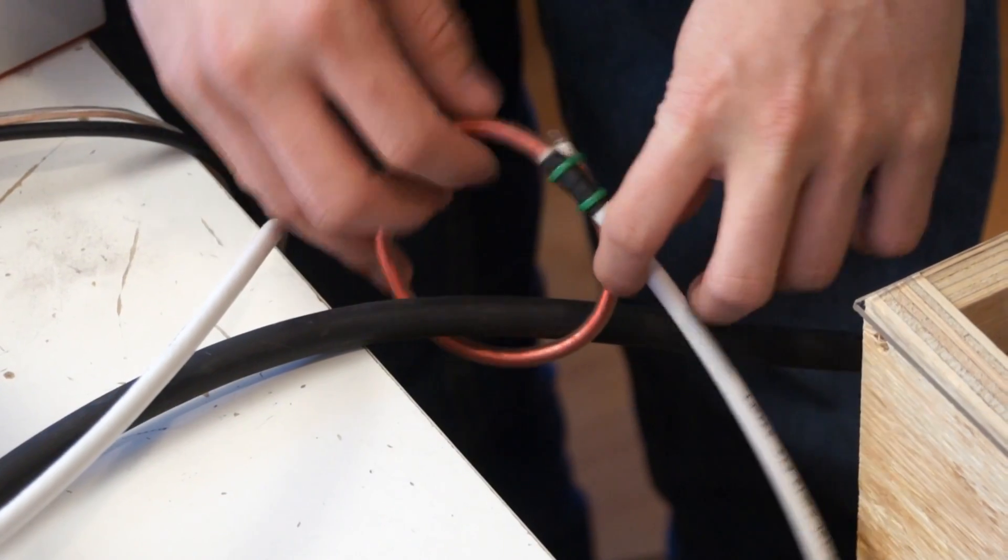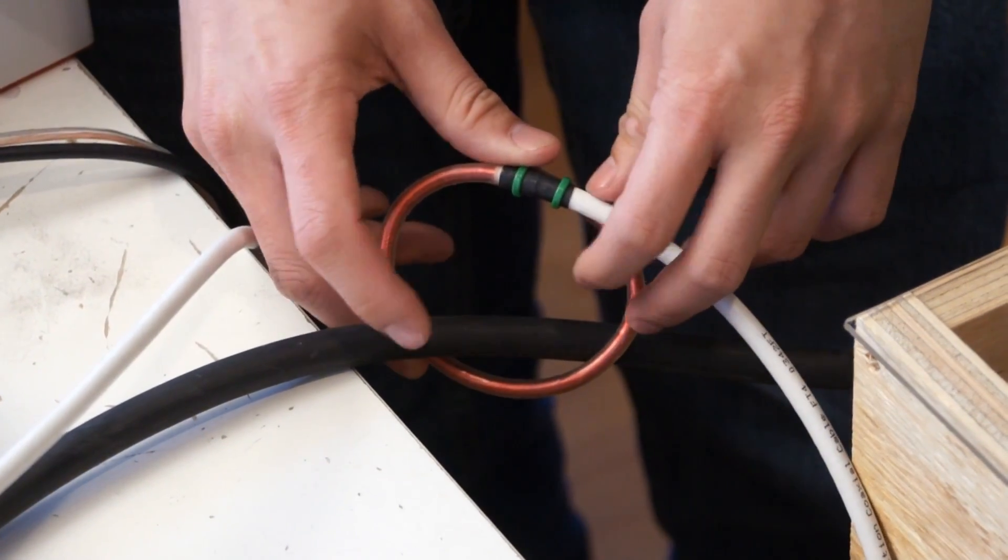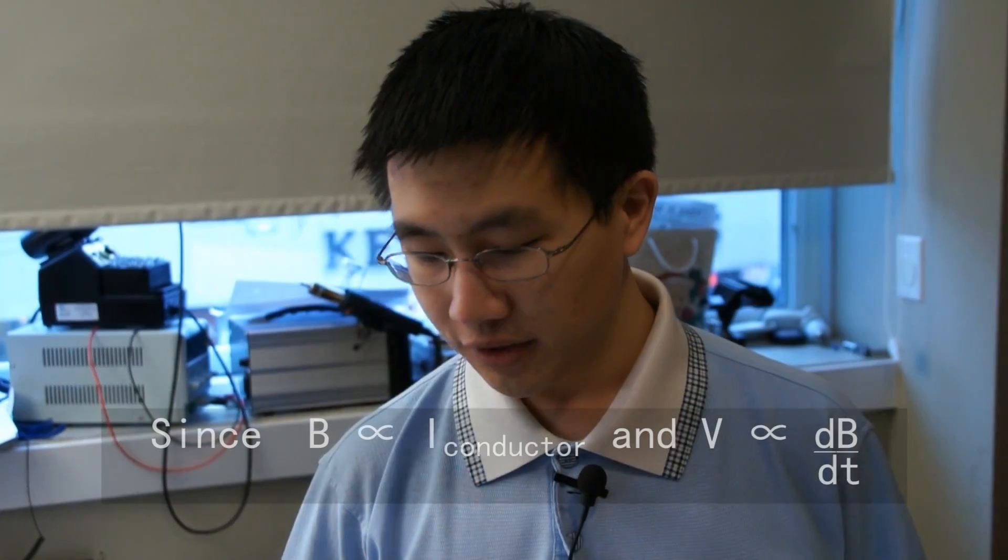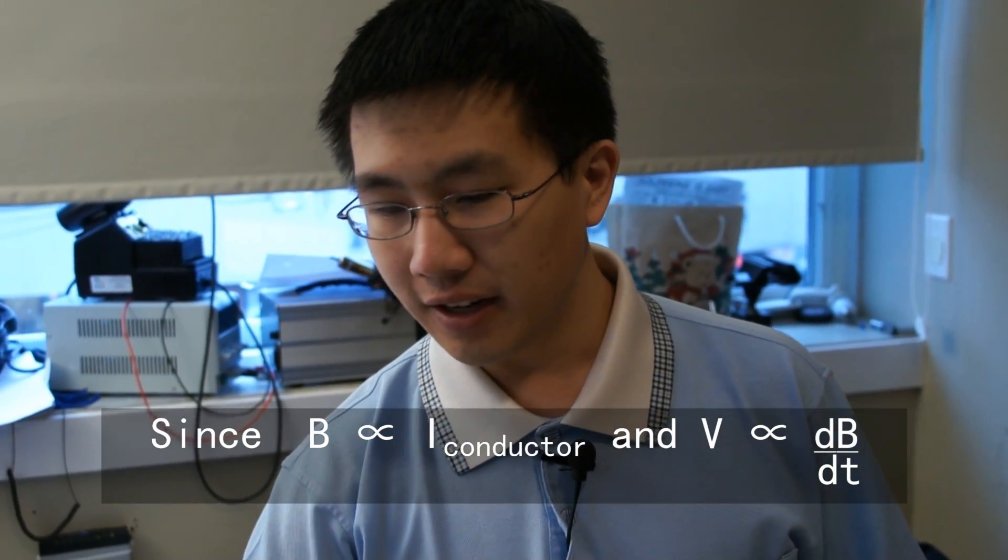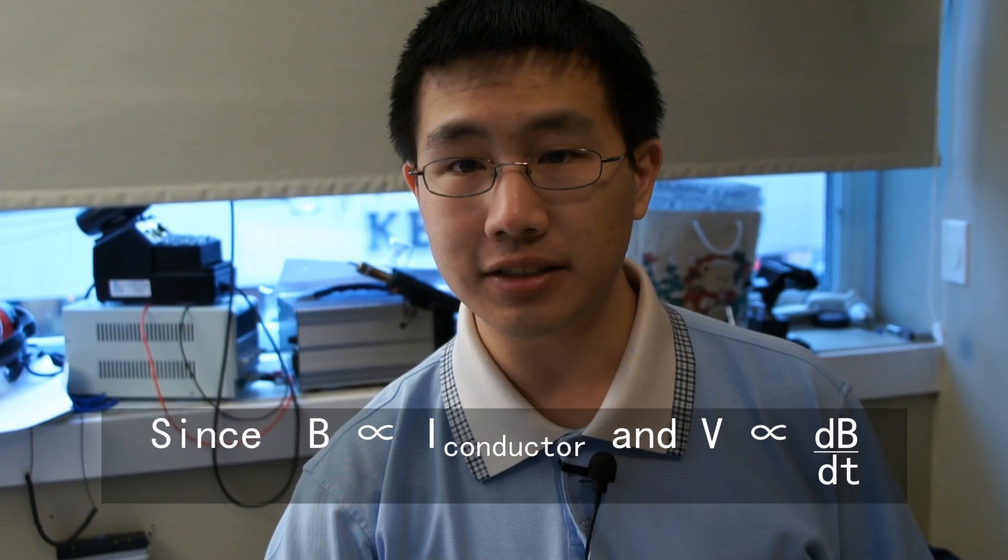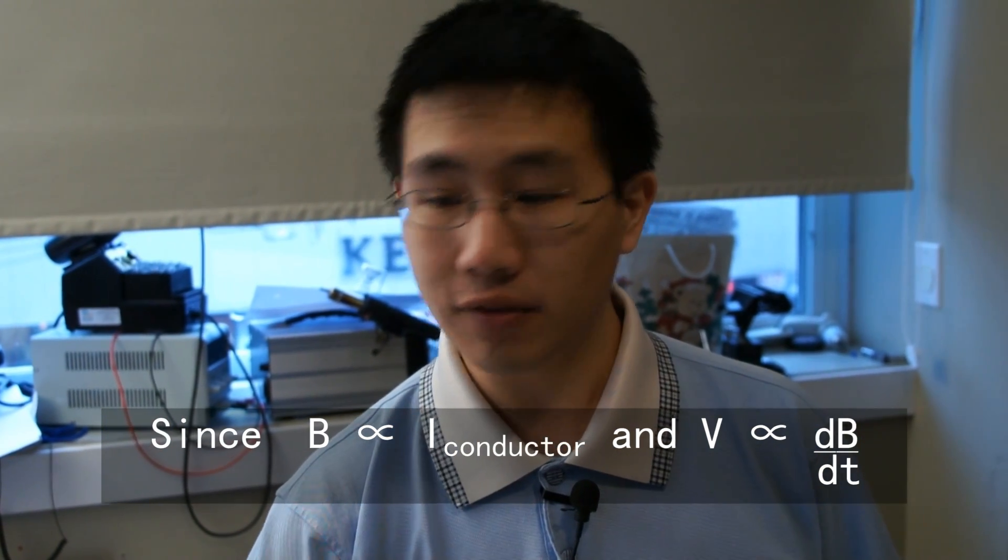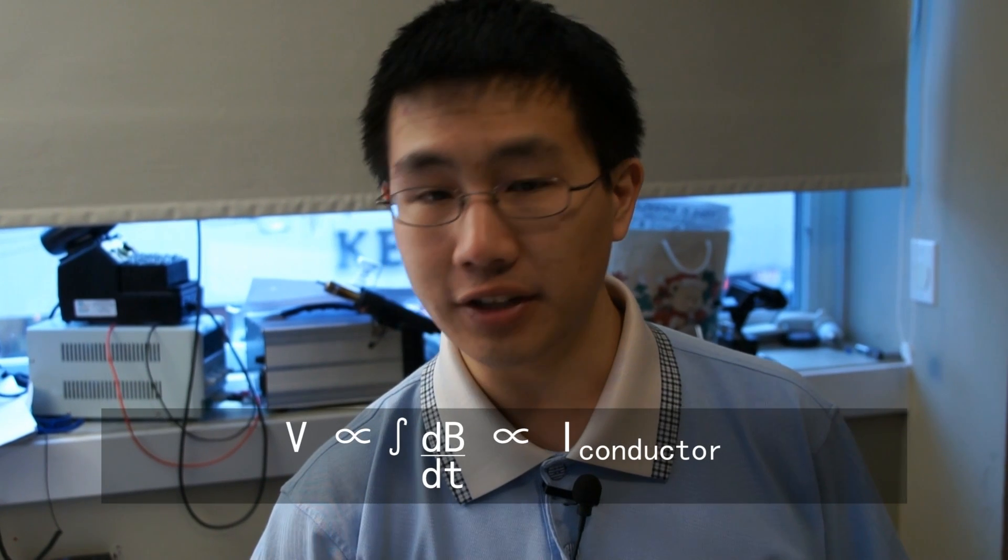Now this current sensor is actually something called a Rogowski coil. It's a flexible current sensor that you can wrap around conductors which are already installed. The Rogowski coil produces a voltage proportional to dB/dt, and in order to turn that into a signal that's proportional to the current flowing through the conductor, you need an integrator.